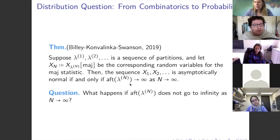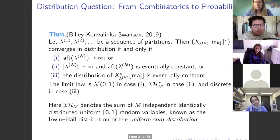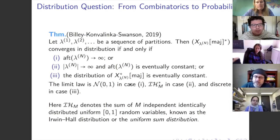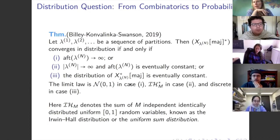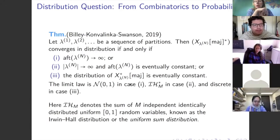If aft doesn't go to infinity, you can still have convergence. We completely characterize convergence in distribution: if aft goes to infinity you get asymptotic normality; if aft converges to a constant but the partitions don't actually converge, you get an Irwin-Hall distribution — also called a uniform sum distribution, which is like taking M copies of the continuous uniform random variable on [0,1] and adding them independently. And if your sequence of partitions eventually repeats the same partition, you get a discrete distribution. So there are exactly three cases of convergence.